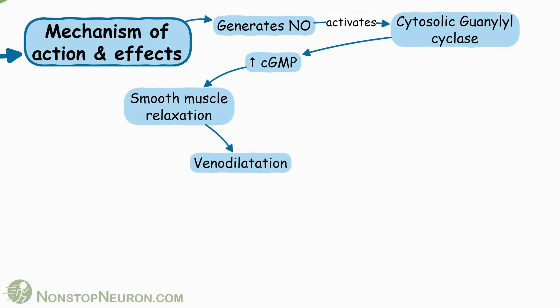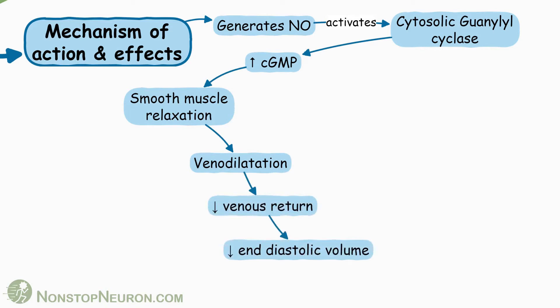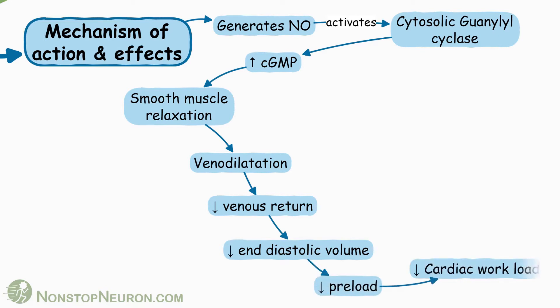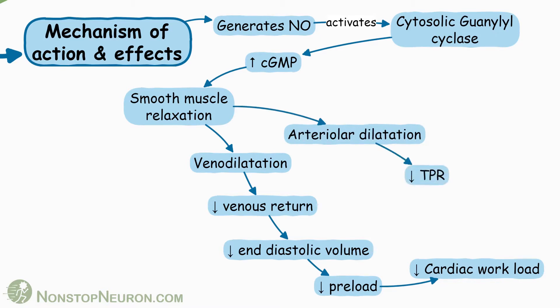The main effect is venodilatation. This decreases venous return, leading to decreased end-diastolic volume. The resultant decrease in preload decreases cardiac workload. There is also some arteriolar dilatation, which decreases total peripheral resistance, resulting in decreased afterload. This also contributes to decreased cardiac work.